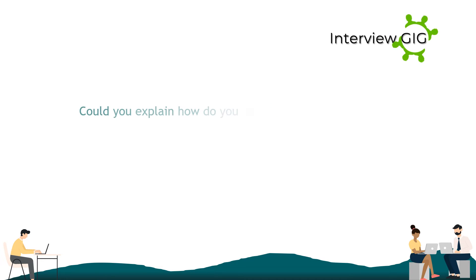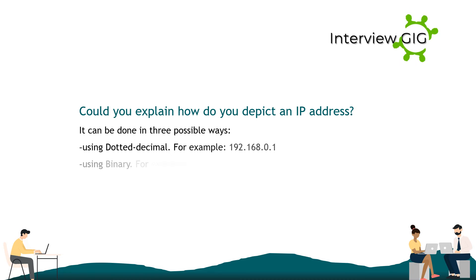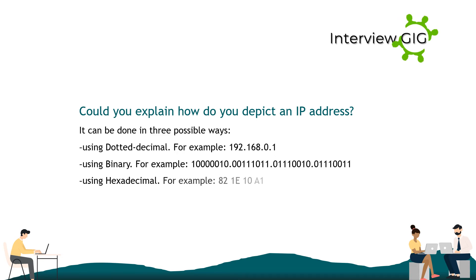Could you explain how you depict an IP address? It can be done in three possible ways: using dotted decimal, for example 192.168.0.1; using binary, for example 11000000.10101000.00000000.00000001; or using hexadecimal, for example C0A80001.